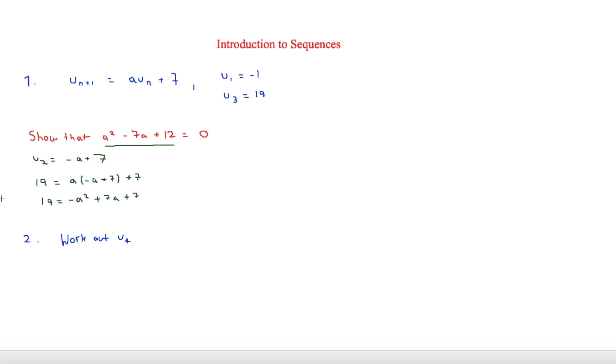And we're going to transfer this all over to that side. Which means that we're going to finally get a squared minus 7a. Because the positive 7a is going to go to a minus. And then 19 minus 7 is going to be 12. Plus 12. And that is equal to zero.